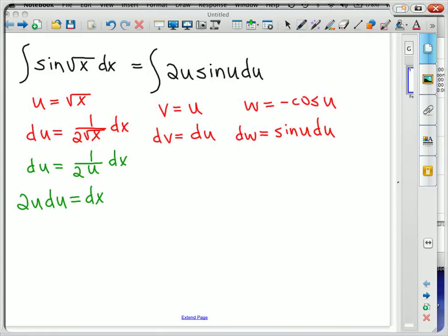So we have that 2 times the integral u sine of u. And now you can see what I did with that 2. 2 times the integral of u is equal to negative u cosine of u minus the integral of negative cosine of u du.